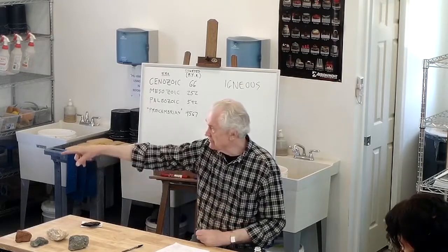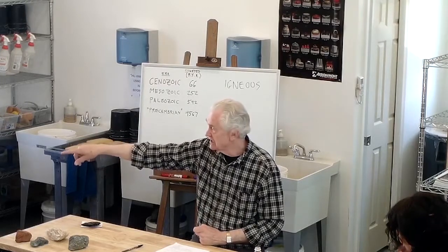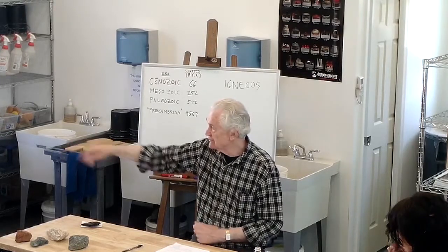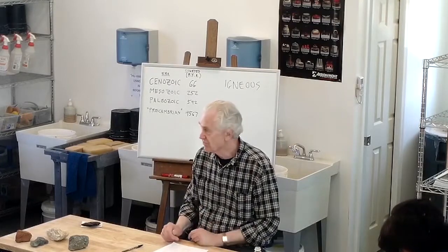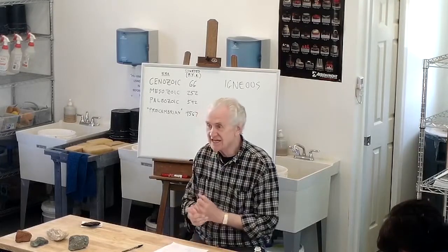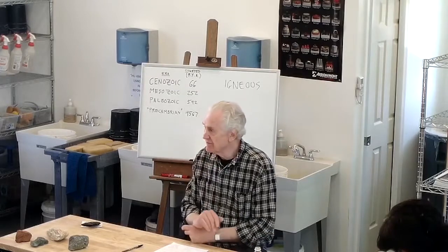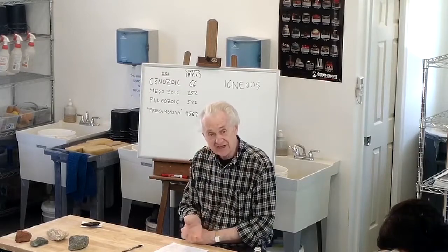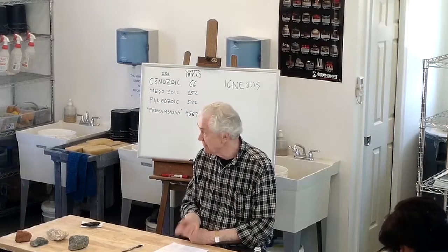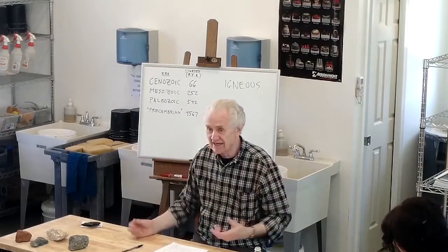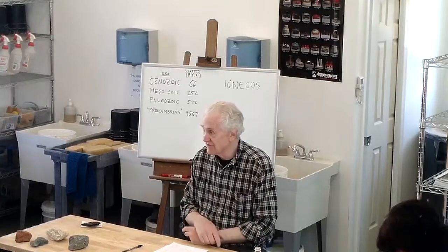So both of those minerals would turn into clay: the feldspar would turn into kaolinite, and the mica would turn into illite, which is another kind of clay. Volcanic ash — we actually use it as a glaze ingredient; it's called pumice, another name for the same thing. That's just plain volcanic ash. You go collect it from Mount St. Helens and you can use that as a glaze ingredient.